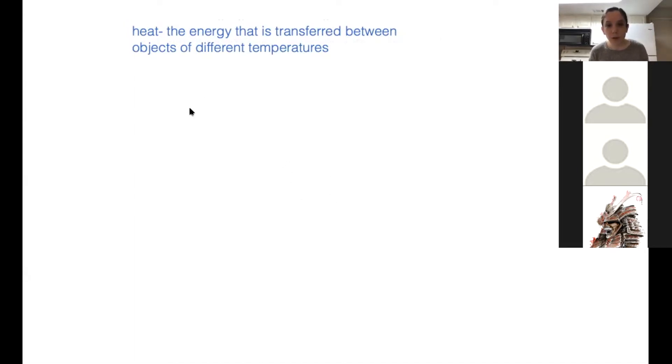If you were to touch an object that felt cold to you, what's happening is that heat is leaving your hand and going into the object. If something feels warm to you, it's just the opposite. You're feeling warmth because heat is leaving the object to go into your hand. Heat always flows from hot to cold.